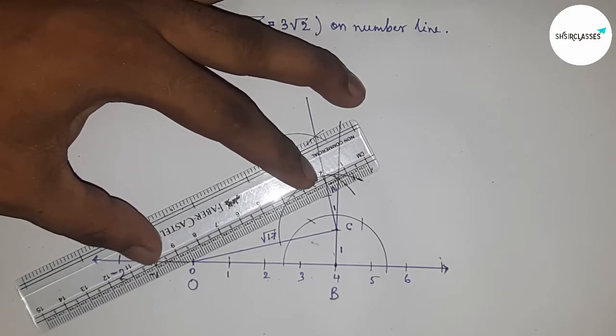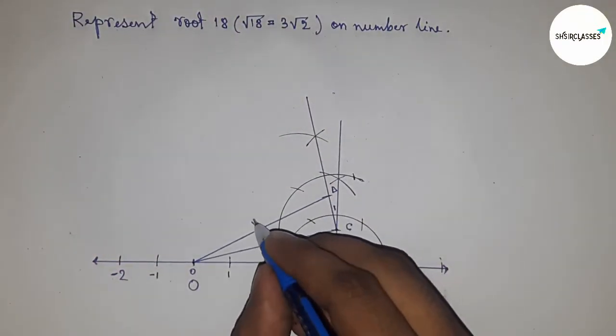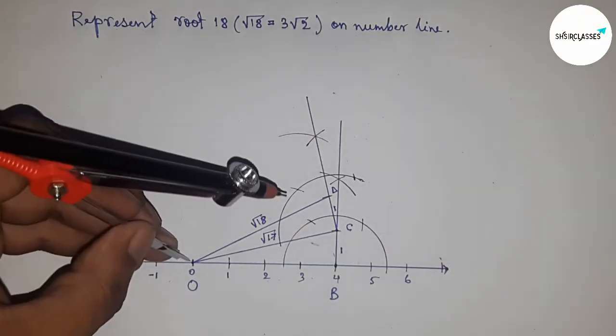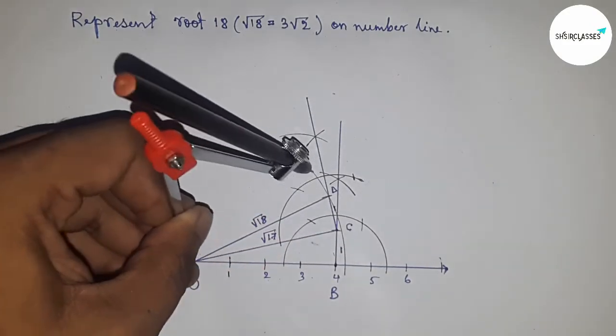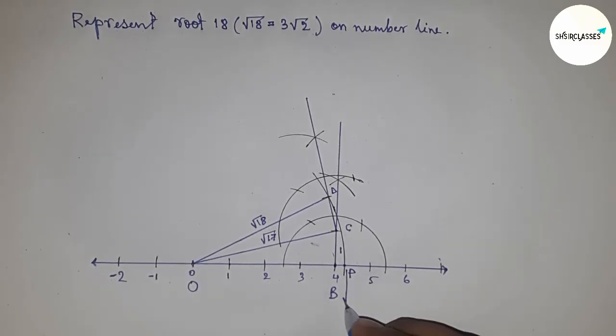Next, joining O and D. Now from right angle triangle OCD, OD equals √18. By taking this and drawing an arc which meets this number line at point P.